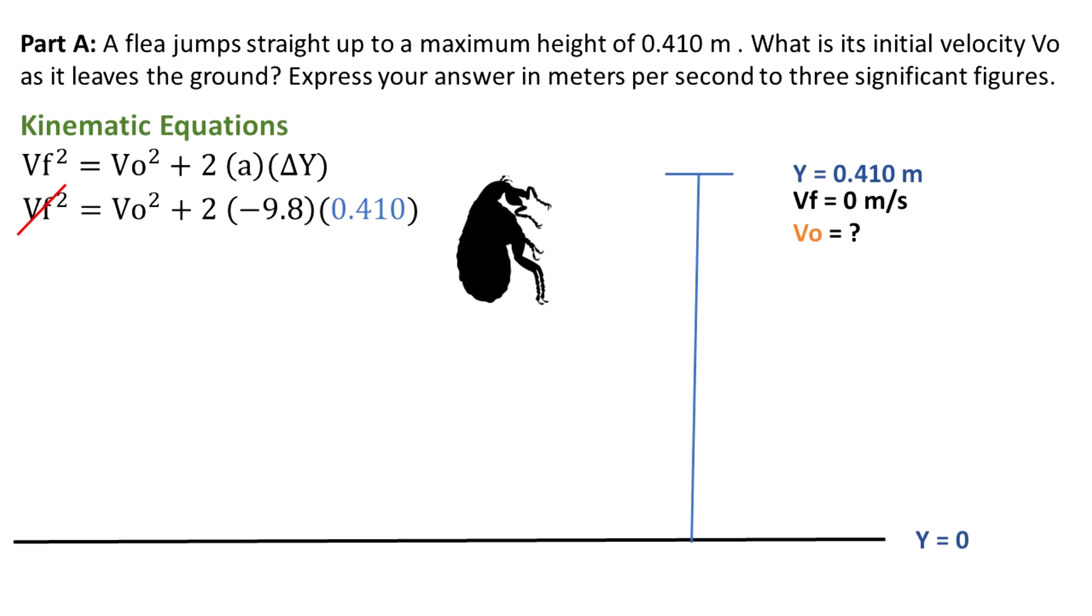We already said that the final velocity is equal to zero. We don't know the initial velocity V0 for now, plus two times the acceleration, that's gravity. The problem stated that gravity should be 9.8 meters per second squared, and it is negative because gravity is going downwards, and 0.41 meters is delta y. That's the displacement of the flea from the ground to the top.